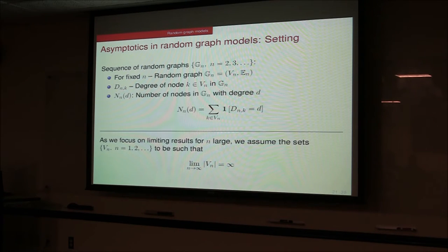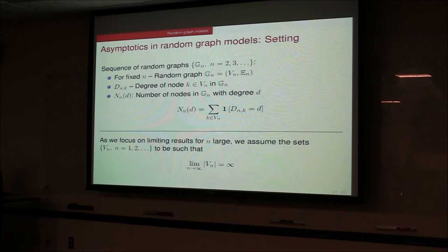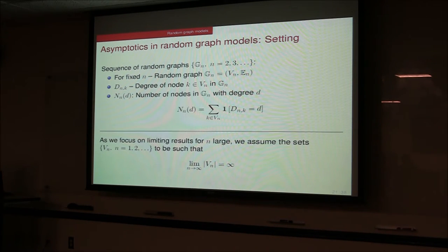For asymptotics in random graph models, we look at a sequence of random graphs G(n) indexed by n. For fixed n, G(n) has a deterministic vertex set V_n and a random edge set E(n). The degree d_{n,k} of node k in graph G(n) is a random variable. N_{n,d} is the number of nodes in G(n) with degree d, so N_{n,d}/n is the fraction of nodes with degree d. In the sequence of G(n)s, the vertex sets are assumed to be increasing.